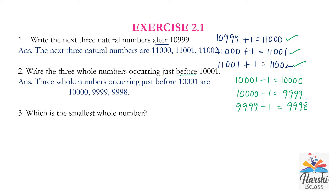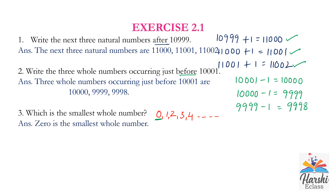Third question: which is the smallest whole number? Whole numbers start from 0 — 0, 1, 2, 3, 4, and so on; they are uncountable. So the smallest whole number is 0.